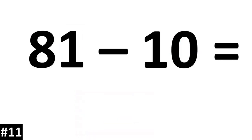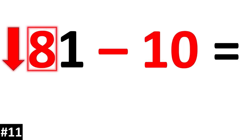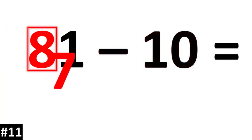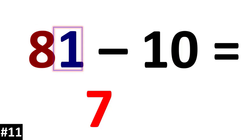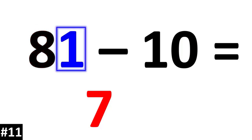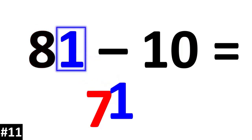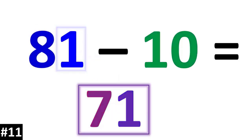81 minus 10. 81 has a tens value of 8. Subtracting by 10 means it goes down to 7. The ones value stays the same, so 81 minus 10 is 71.